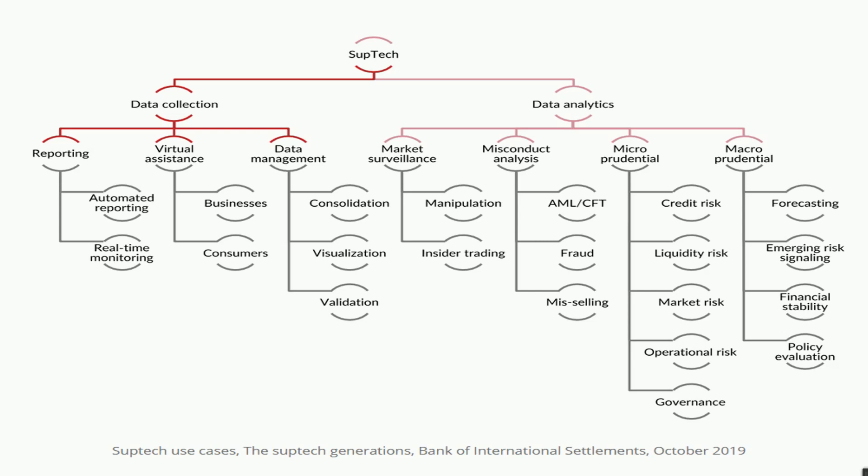In data collection, a regulator will look at reporting, virtual assistance, and data management. Under reporting, a regulator wants reporting to happen automatically with very little or no manual intervention. They work with supervisory technology service providers to create systems where organizations cannot do manual intervention, and whatever data is in their system can be pulled automatically with the organization's approval — creating an automated reporting system.